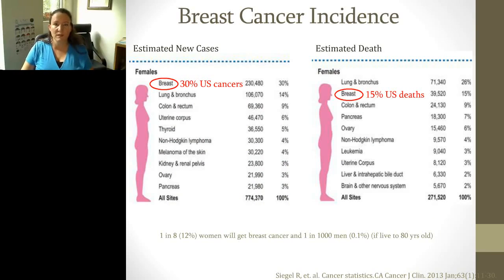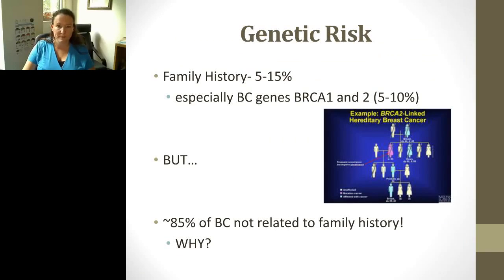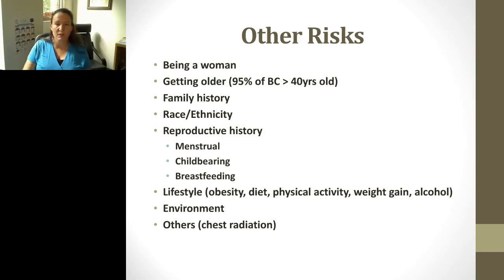Breast cancer is the number one diagnosed cancer in women and the second leading cause of death. This is a huge problem, and we need to find modifiable risk factors to prevent it. Many people look at genetic factors, and we know that family history or genetic risk factors account for about 5 to 15 percent of breast cancer — especially genes like BRCA1 and BRCA2. But that means about 85 percent of breast cancer is not related to family history.